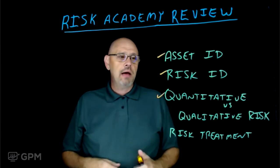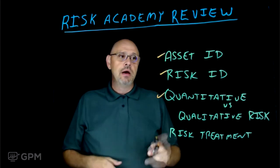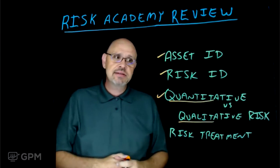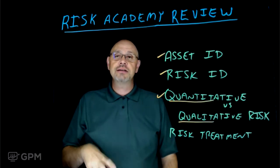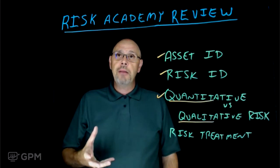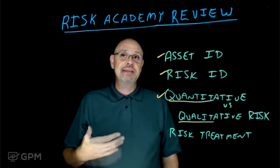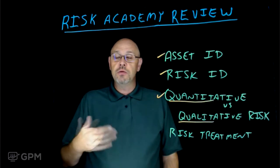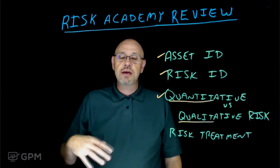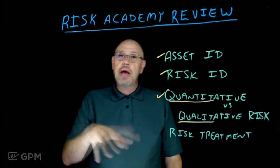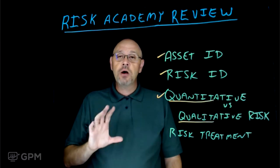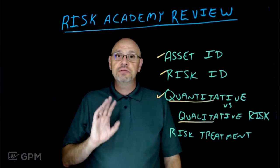Then we talked about different ways of categorizing risk — quantitative versus qualitative risk. Quantitative tries to get to something called an annualized loss expectancy, a dollar figure. Qualitative risk is your subject matter expert's best guess — sometimes listed as low, medium, high, or critical. We also talked about semi-qualitative, where you rank everything on a scale of 1 to 5 or 1 to 10 and come out with a number. That's about categorizing your risks, and it helps you identify the things most important to address first.